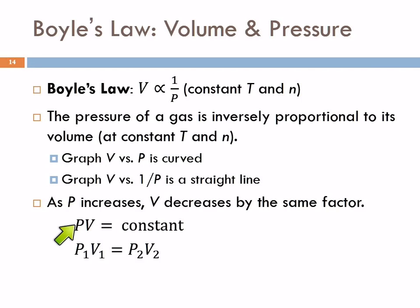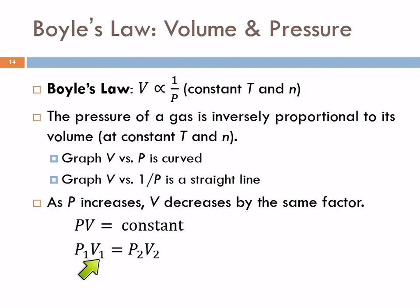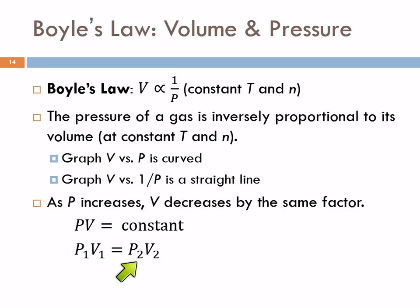That relationship is this: the pressure times the volume is equal to some constant. That constant changes for every different situation, but the useful relationship is P1V1 equals P2V2. So the volume at pressure 1 is equal to a different volume at pressure 2, and we can predict what it is.